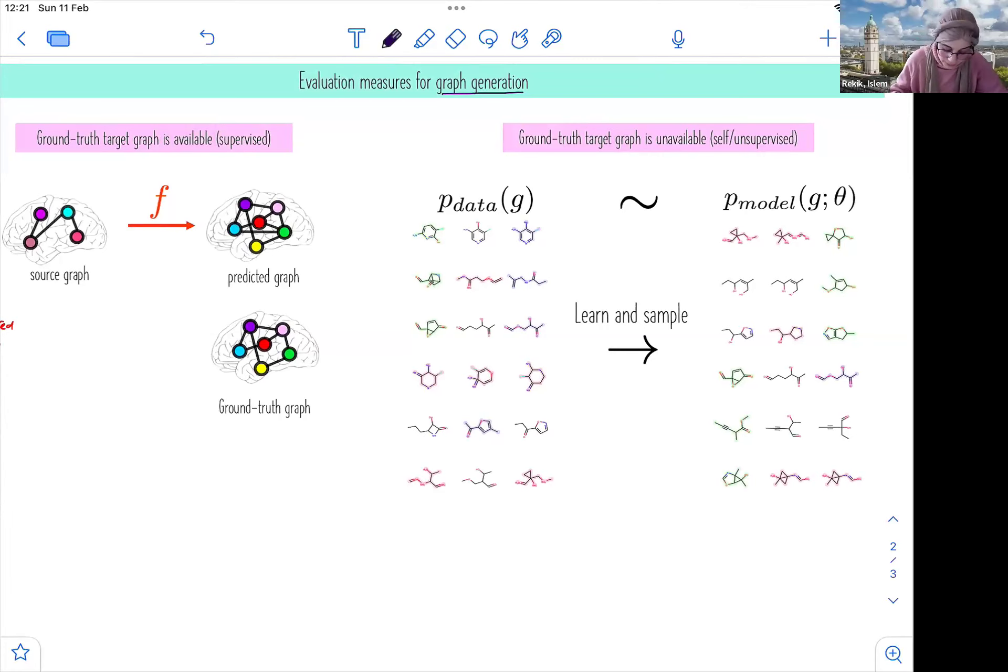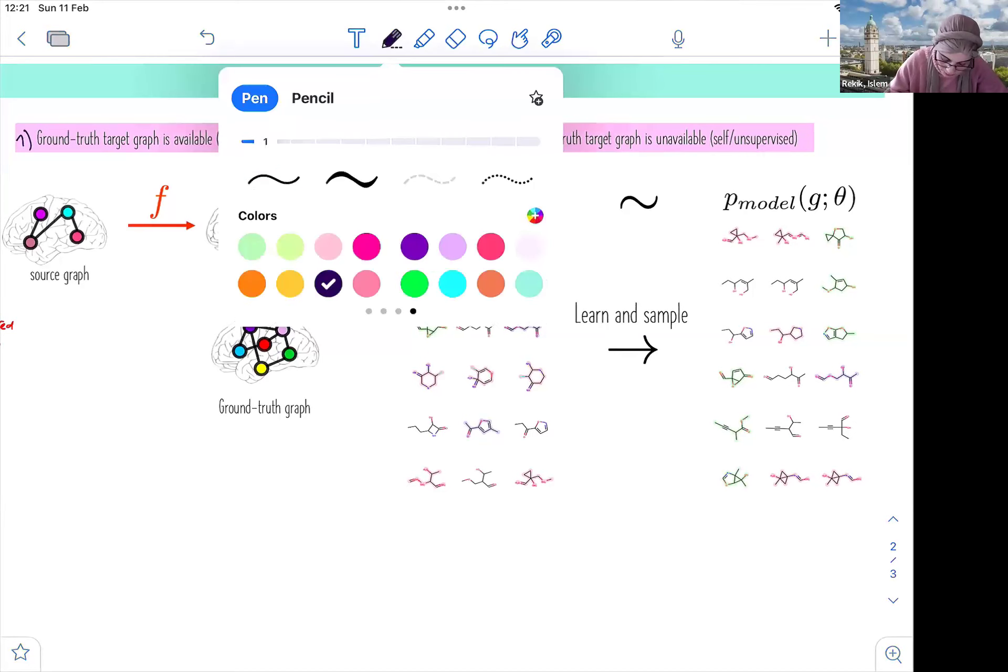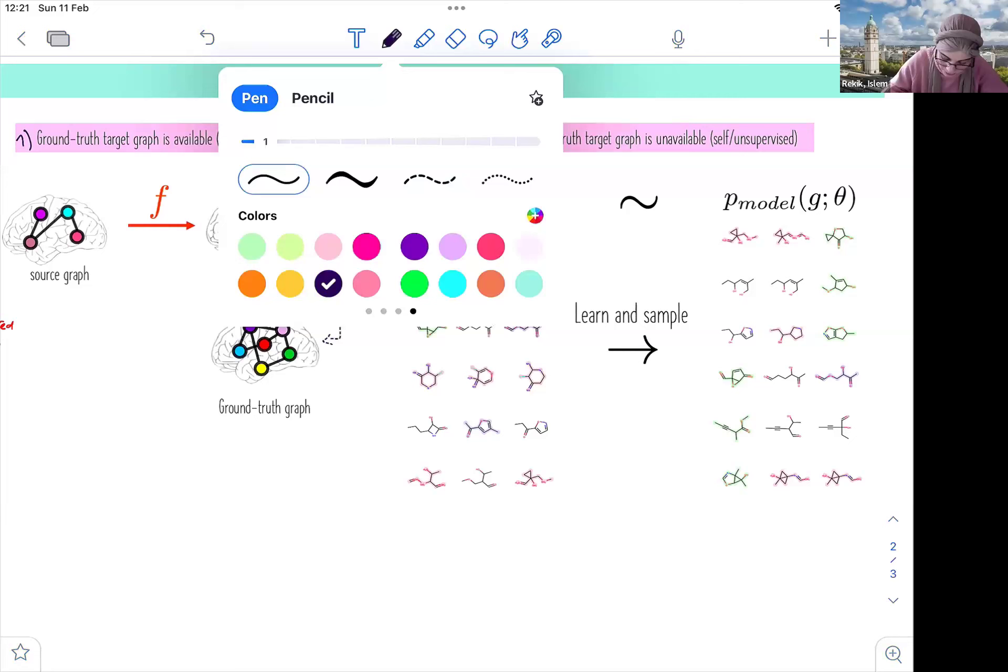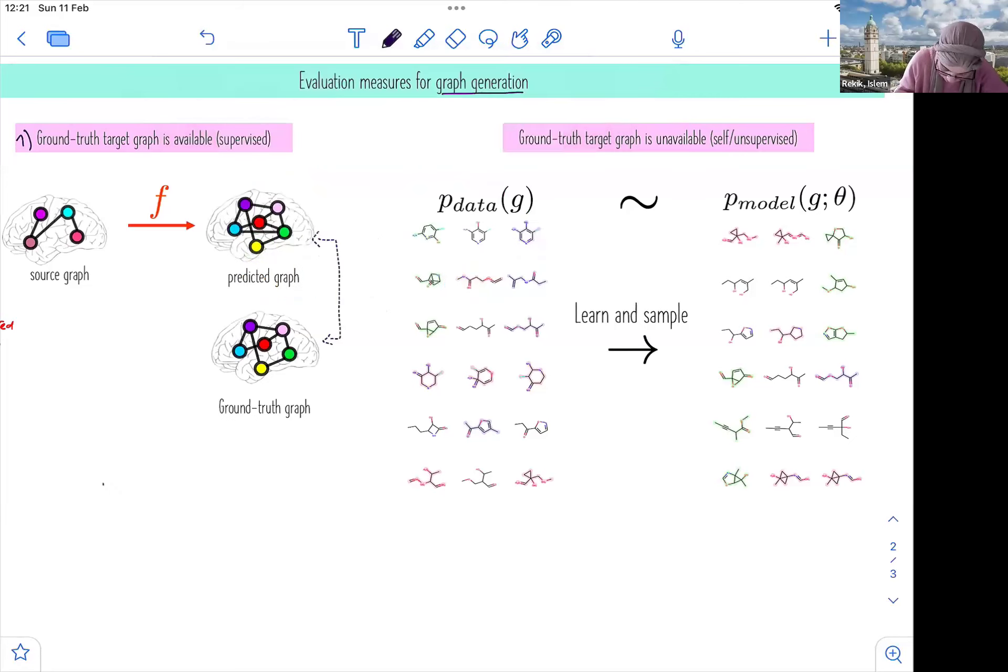And first, the first thing is when we have the ground truth target graph. So when the ground truth target graph is available, it's actually much easier because we know that our target graph should look like this. So we only need to evaluate the distance between these two graphs, the distance between the predicted graph. So let's call it G tilde and G. So this is the target, these are the target graphs.